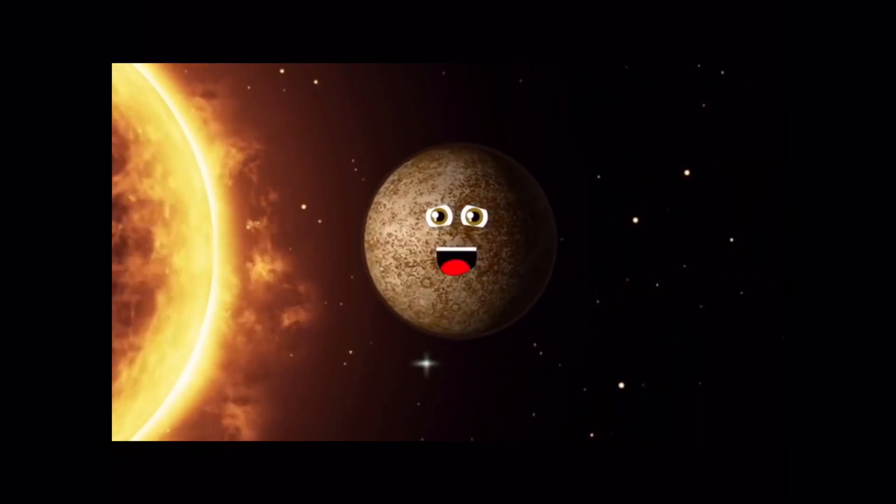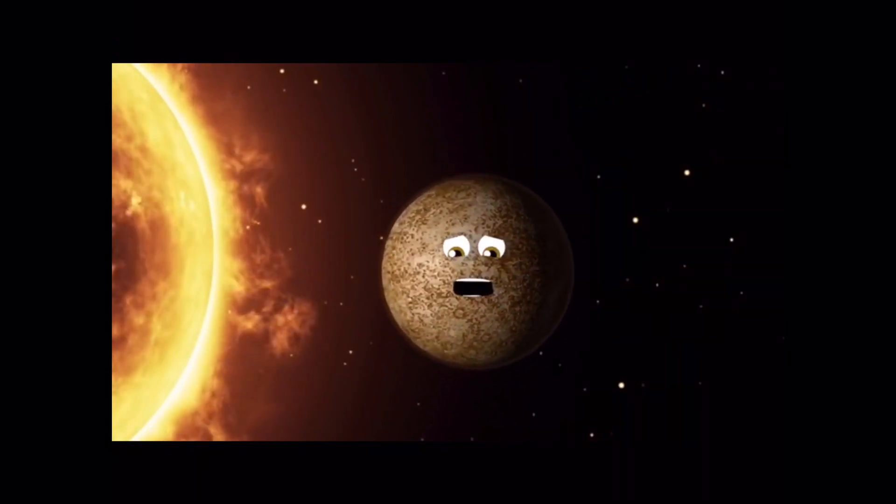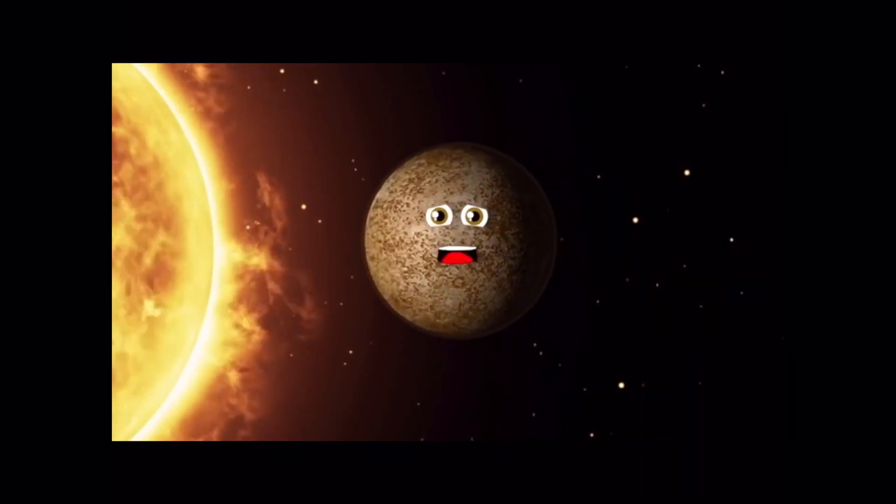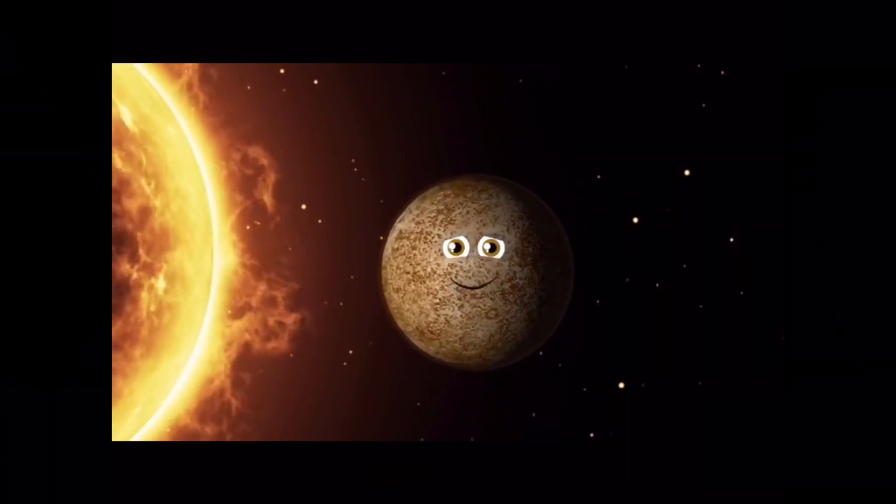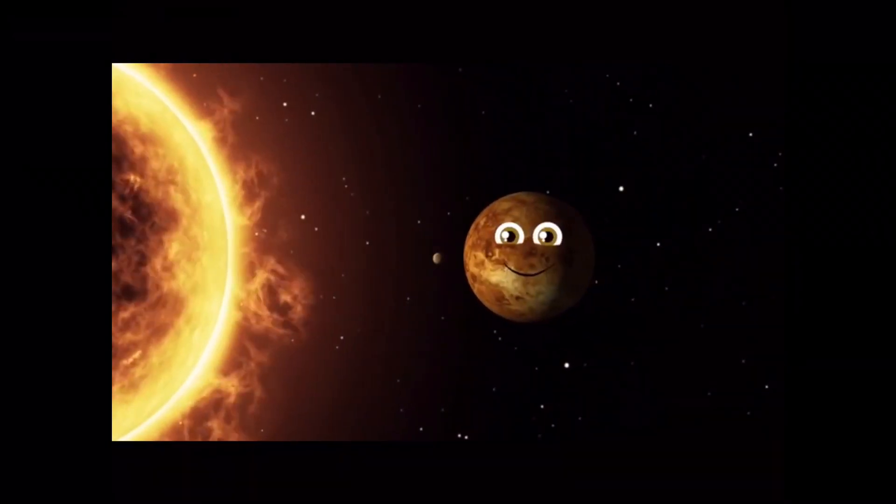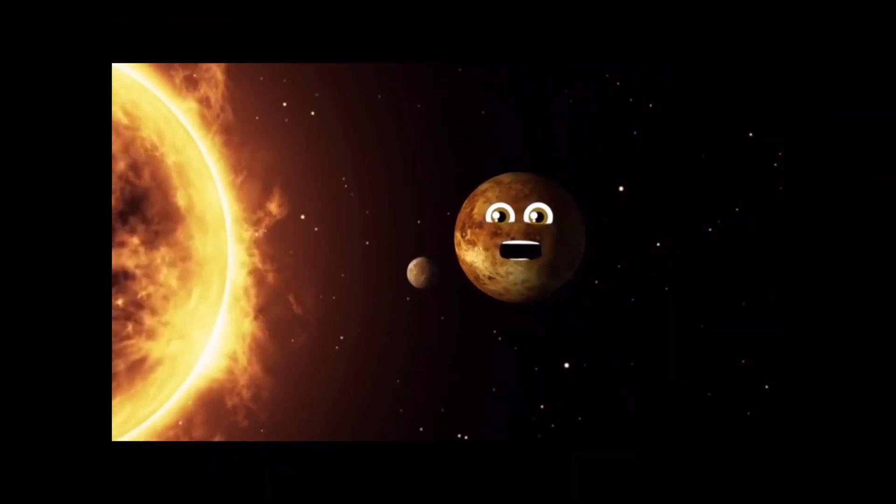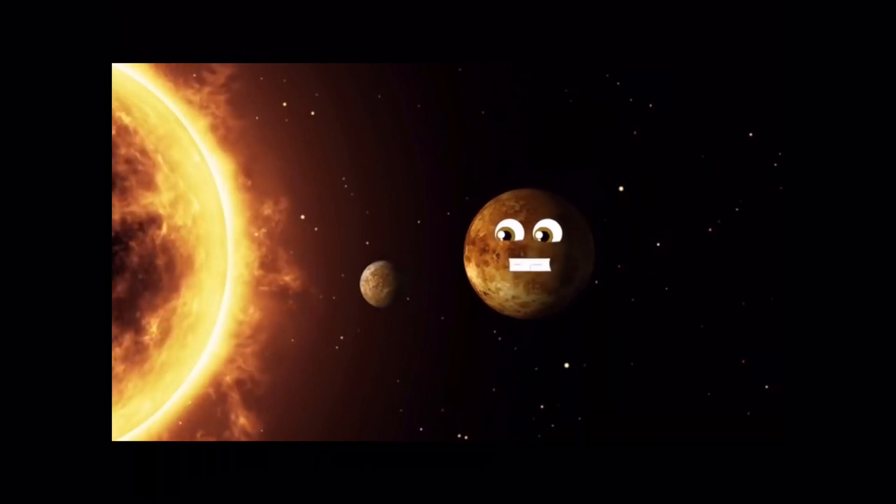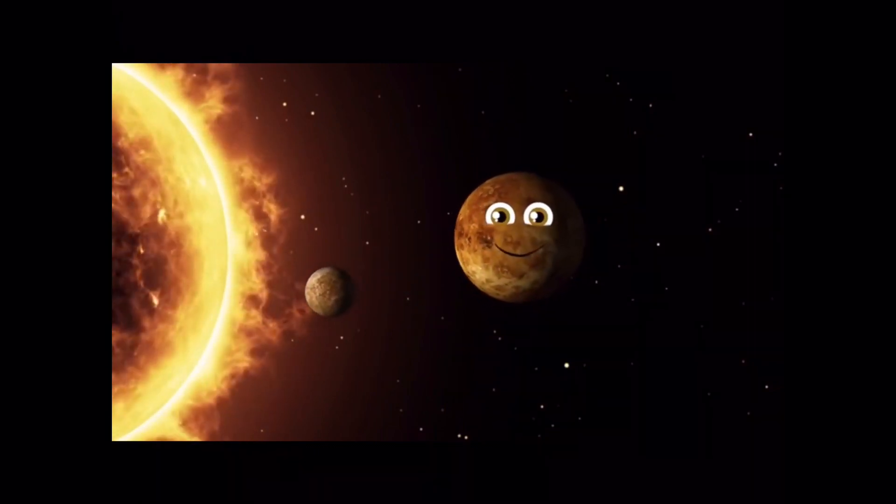Mercury is the little planet that's closest to the sun. It only takes 88 days for Mercury to orbit the sun. Now Venus is a beautiful planet, but it's too hot to live there. You could cook an egg right on the ground on Venus.